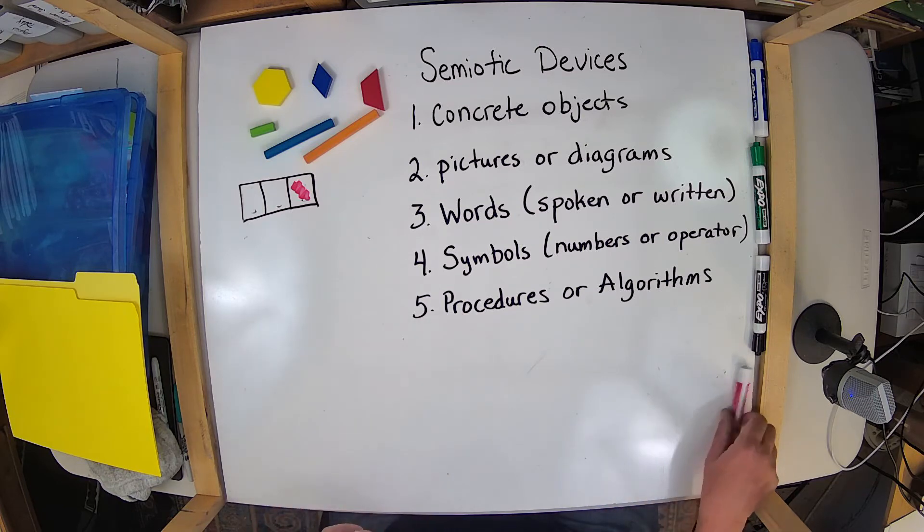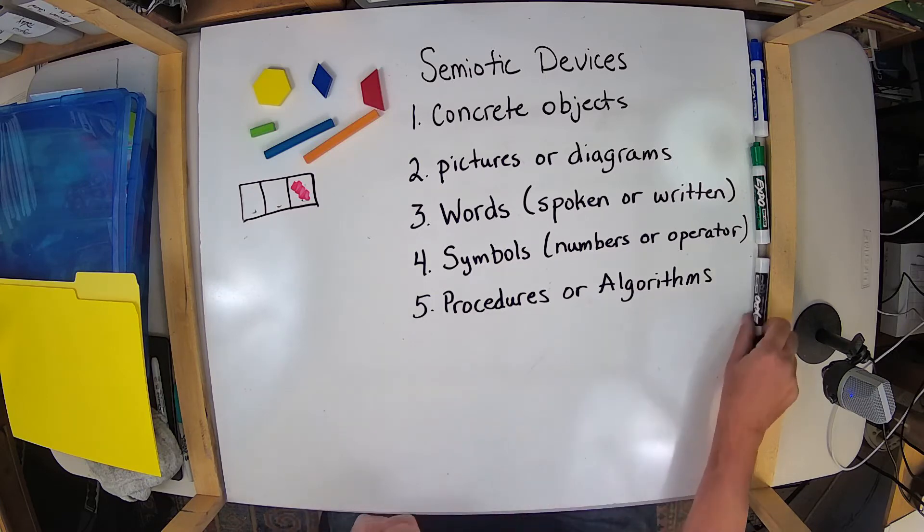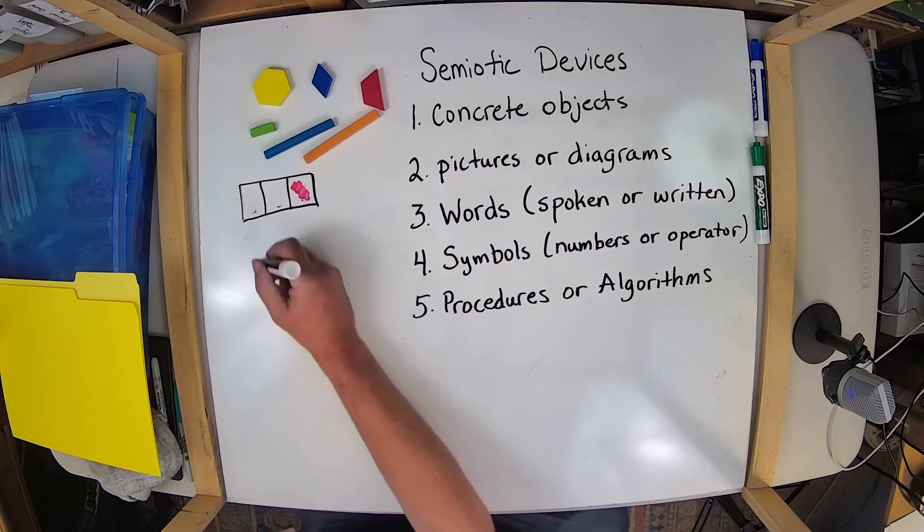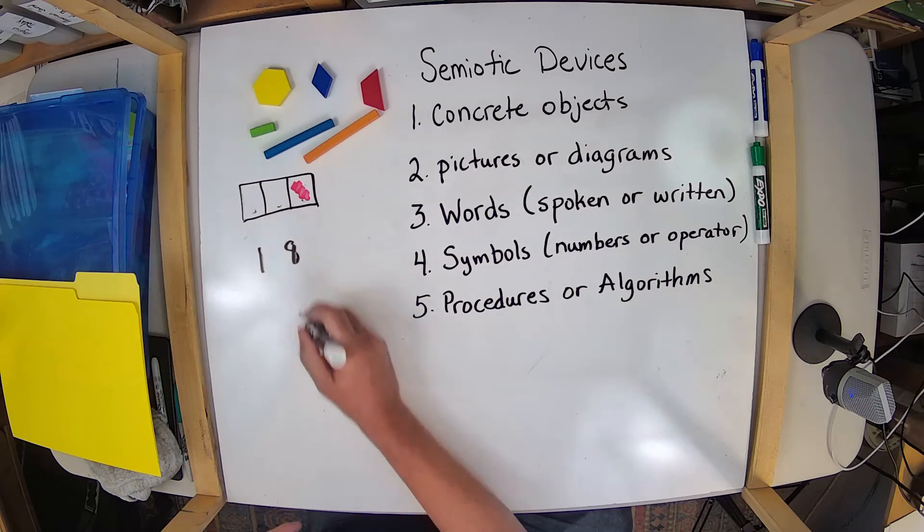And finally, there are things like symbols. And of course, symbols are numbers. And for example, one and eight are numbers.